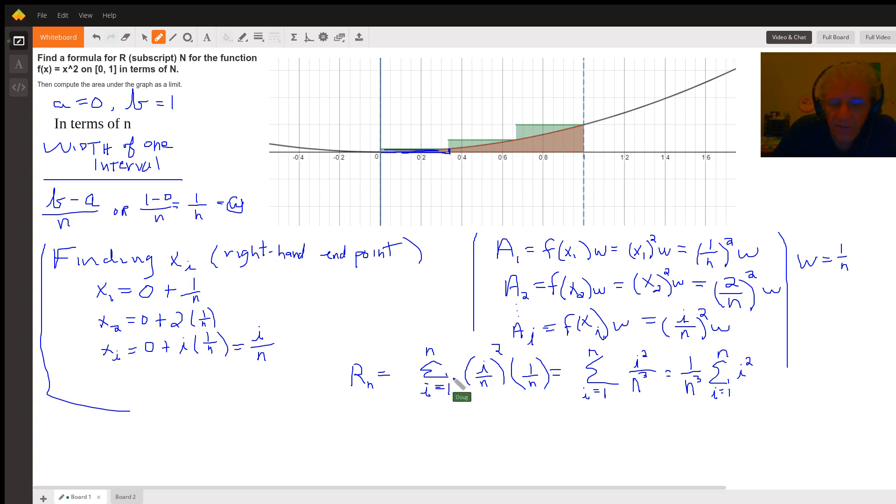We use summation notation to say we're going to add the areas of all these rectangles together. So we're saying the sum from i equals one to n of i over n, the quantity squared, that's the height of the rectangle, times the width.